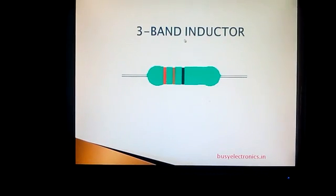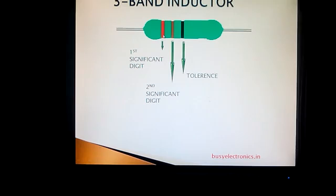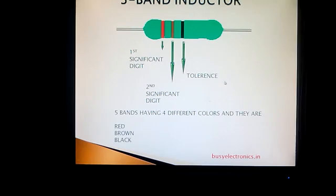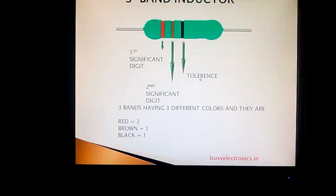We now go to a 3-band inductor. Here we have 3 bands, as opposed to the 4 bands in the earlier case. The first band is still the first significant digit and the second band is the second significant digit — same as before. However, unlike the 4-band case, the 3-band inductor does not have a multiplier. Instead, the third band is a tolerance.